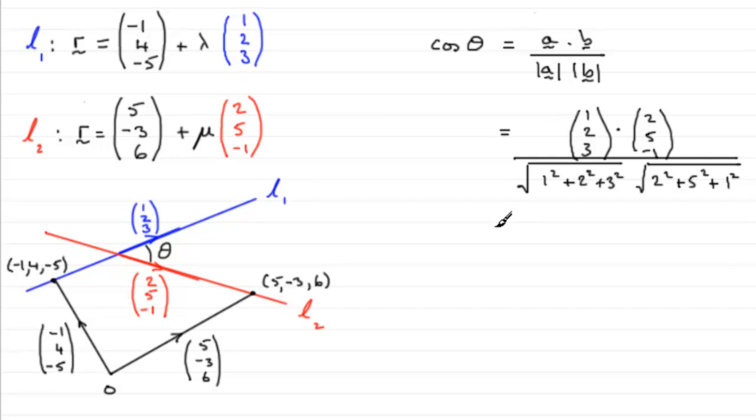Now, if we work this out, you should be familiar with the dot product here. It's going to be 1 times 2, which is 2, plus 2 times 5, which is 10, plus 3 times minus 1, which is minus 3. And then we've got to divide it by, and this comes to the square root of 14, and the other square root is the square root of 30.